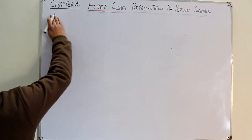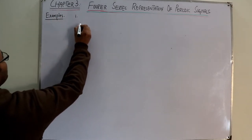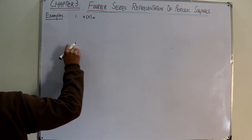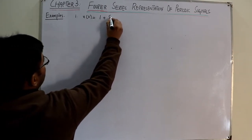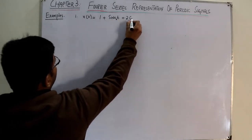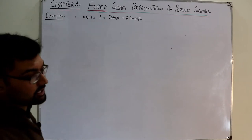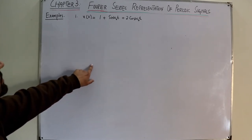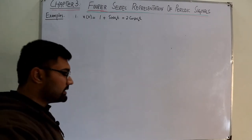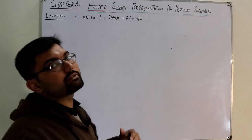Let's take two examples. For the first example, since these are simple signals, I could simply write them in terms of exponentials rather than going through the full ak integral formula.